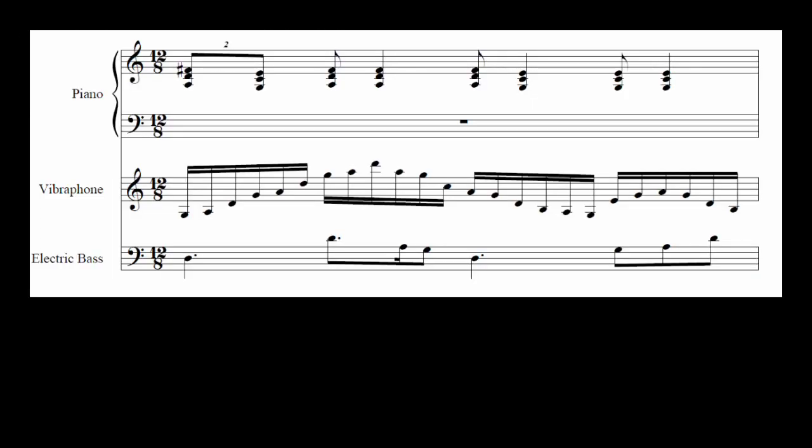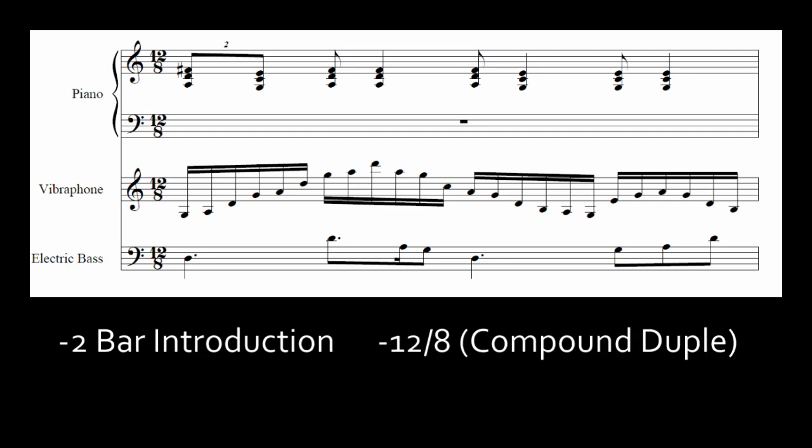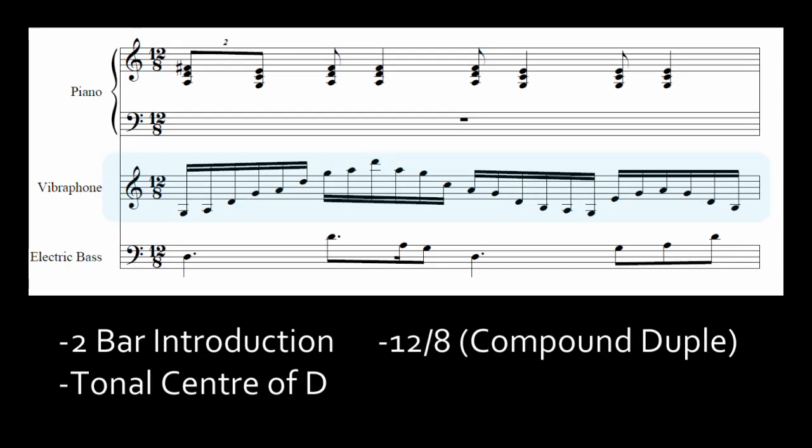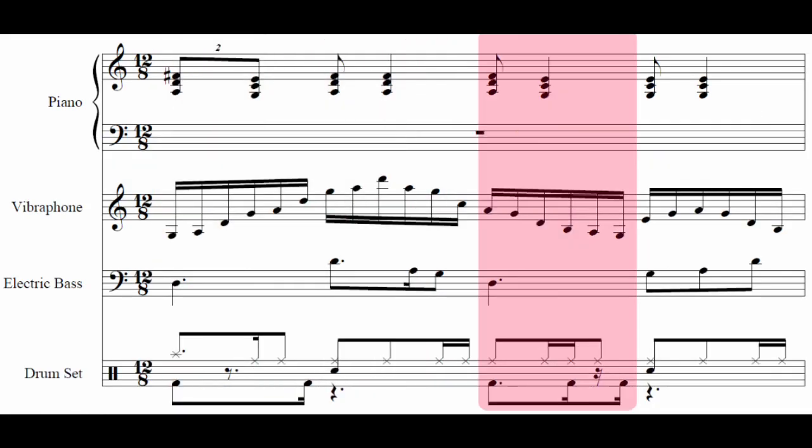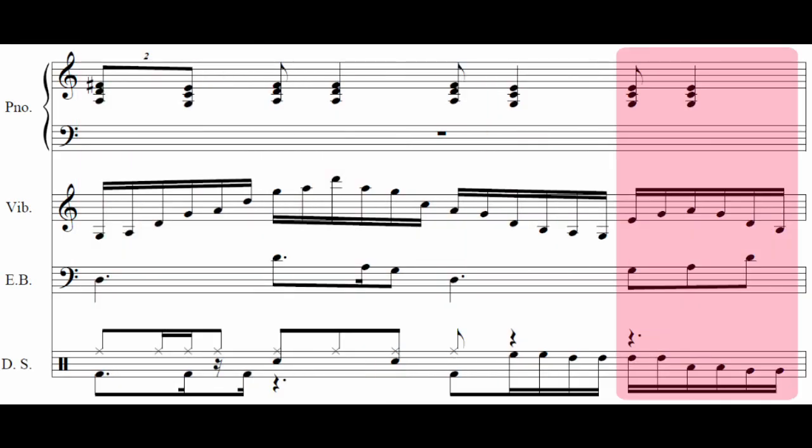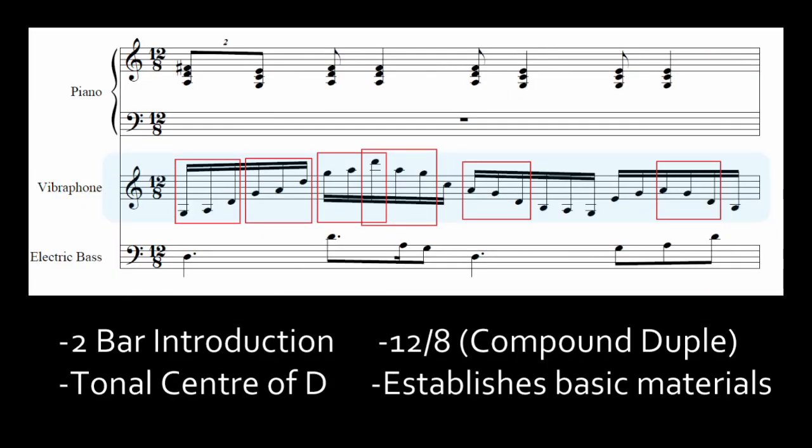The very first statement the piece makes is a two-bar introduction. It is a 12/8 vamp based around a D minor 4 chord with vibraphone flourishes outlining G sus2 and inversion of D sus4 arpeggios displaced by octaves. This establishes a tonal center and some of the primary rhythmic materials, with the vibraphone flourishes functioning to keep the vamp from sounding static. Tonality is Mixolydian, indicated by the b7 chord featured in the keyboard accompaniment.